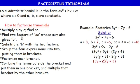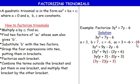To factorize the trinomial, multiply a by c: a = 3, b = 7, c = −6. So ac = 3 × (−6) = −18. That is step one. Step two: find two factors of ac whose sum also gives b. We need two numbers that multiply to −18 and add to 7.